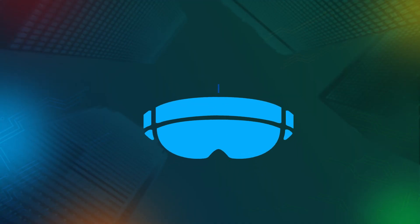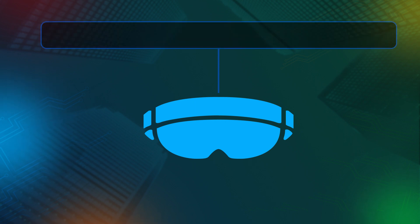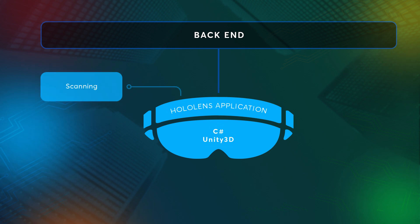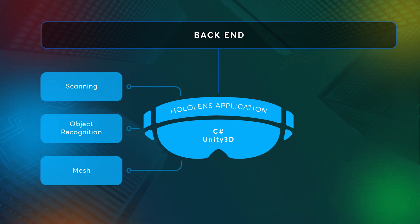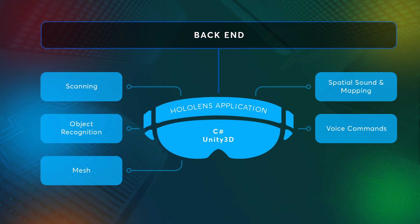The backend can utilize any general-purpose programming language for web and related technologies. The application itself, created with C Sharp and Unity 3D, enables any hardware features required by the project.